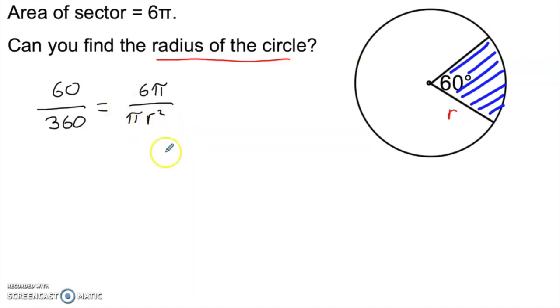As always, I want to simplify anything that's easily simplified. 60 over 360 is 1 sixth. And on the right-hand side, pi divided by pi is 1. So we end up with just 6 over r squared. Cross multiplying gives us r squared equal to 36, which means we have a radius of 6.